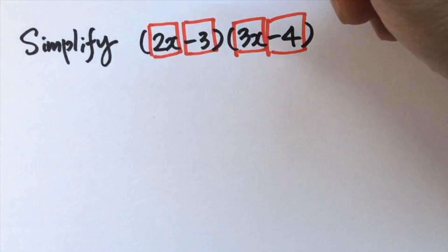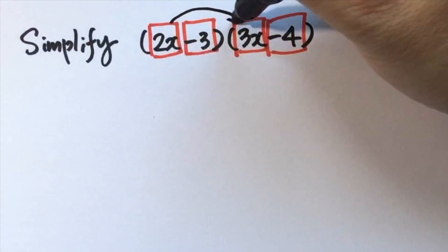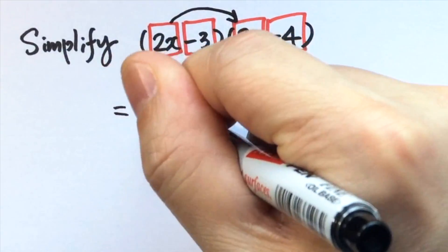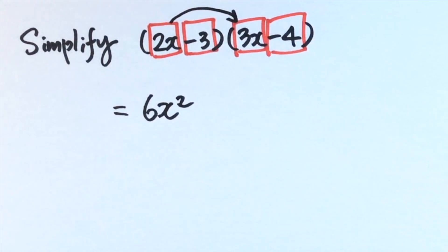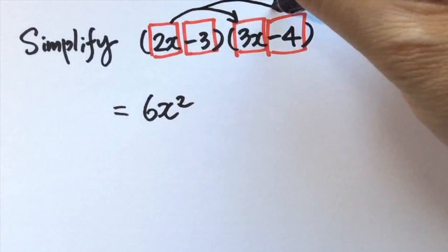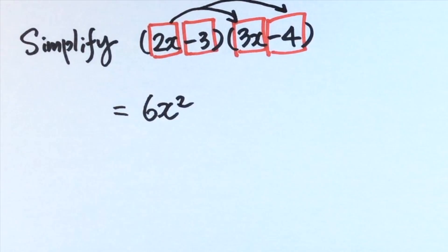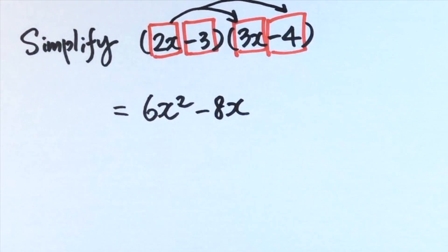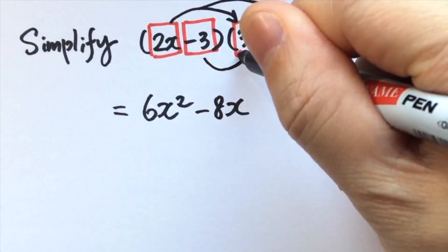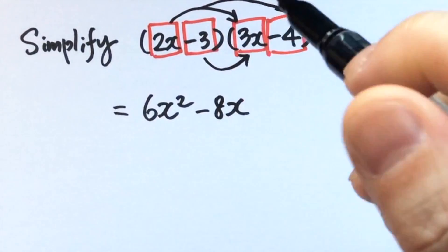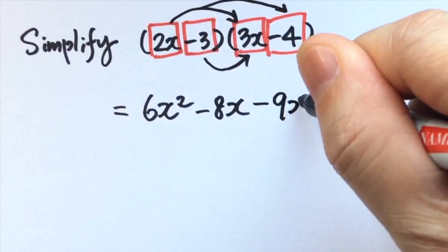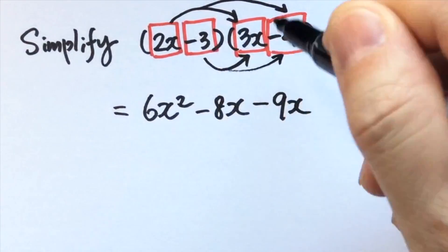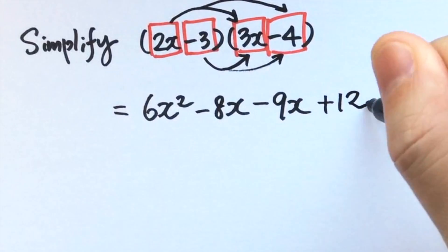Now we apply the distributive law. 2x multiplied by 3x gives 6x squared. 2x multiplied by negative 4 gives negative 8x. Then negative 3 times positive 3x gives negative 9x. Negative 3 times negative 4 gives positive 12.